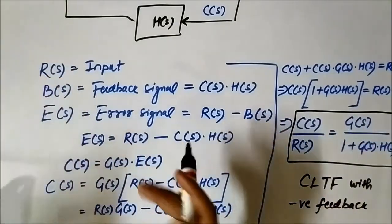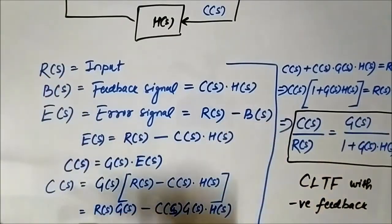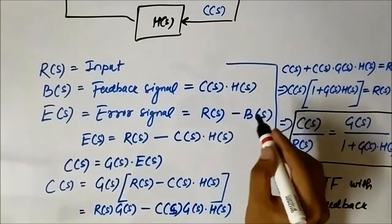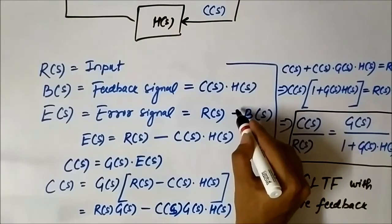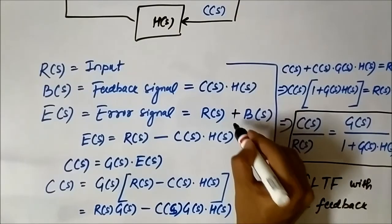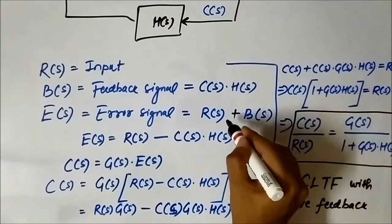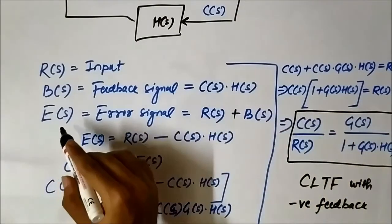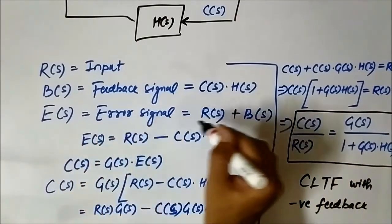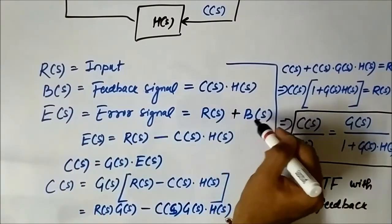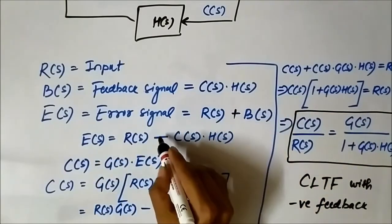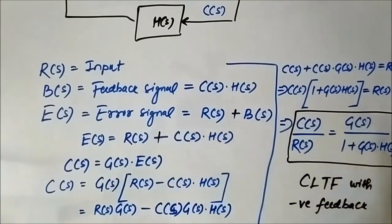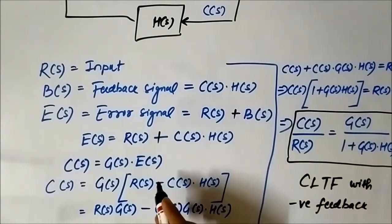The only change is that instead of minus, it becomes plus. So the error signal becomes E(s) = R(s) + B(s), and therefore E(s) = R(s) + C(s)·H(s).